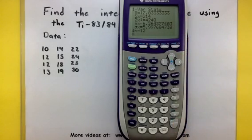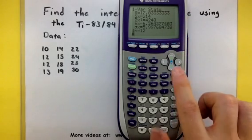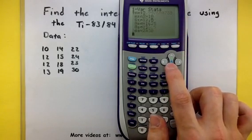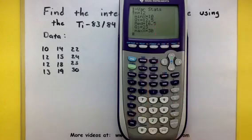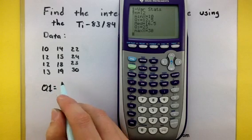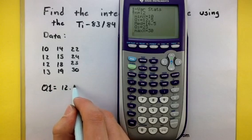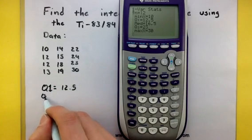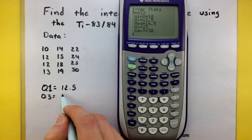Notice how it gives us a lot of different information. Scroll down and you'll be able to find the Q1 and the Q3. Let's go ahead and write these down. I'm getting that Q1 is 12.5 and Q3 is 23.